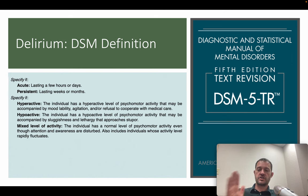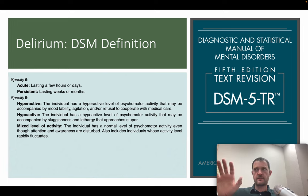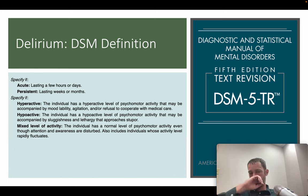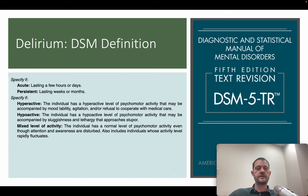The DSM specifies acute versus persistent: if the delirium resolves within a few days, call it acute; if it lasts weeks to months, it's persistent — and note that delirium can last a long time. There's also differentiation by level of arousal and activity: hyperactive means increased psychomotor activity, possibly with mood lability, anxiety, agitation, or refusing care. Hypoactive is reduced awareness, low energy, not moving much, sleeping a lot, and appearing sluggish or lethargic.